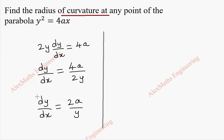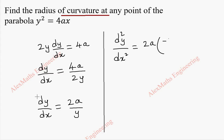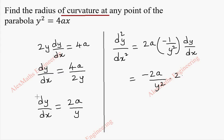Now, for finding the second derivative, we are going to use this dy by dx. So d²y by dx². This 2a is a constant, so we keep it as it is. The differentiation of 1 by y is minus 1 by y square. As per the chain rule, we have to differentiate y, which is dy by dx. So this is minus 2a by y square into 2a by y, giving minus 4a square by y cube.